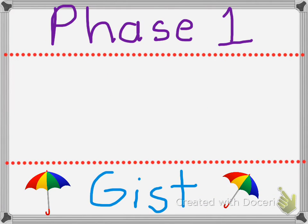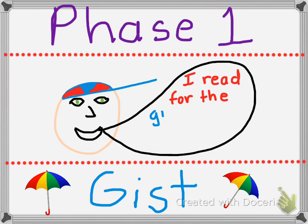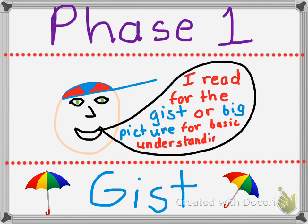So let's take a deeper look at what is phase one: gist. In the first phase, what we're going to do is read for the gist, or the big picture, for a basic understanding. We really want to know what we're reading about, get an idea of the topic and the big ideas to get our brain prepared for digging deeper.